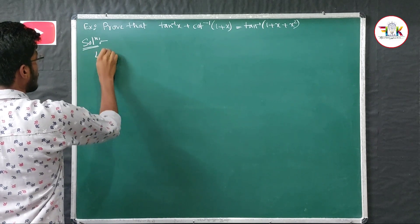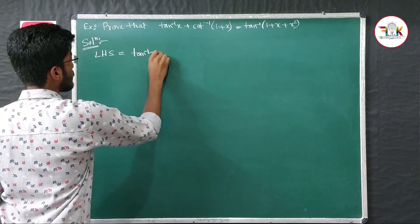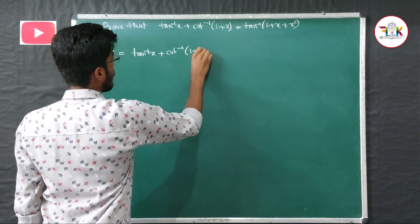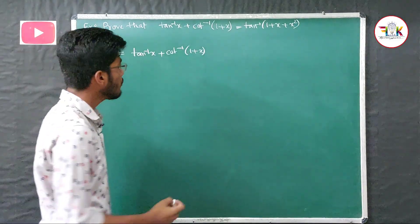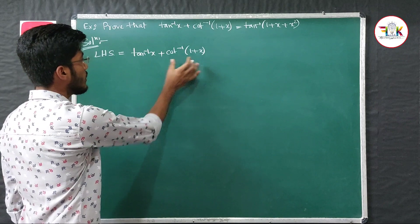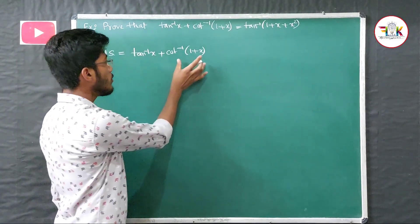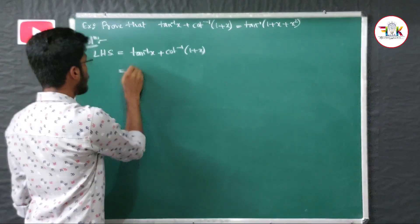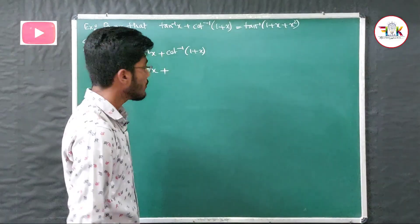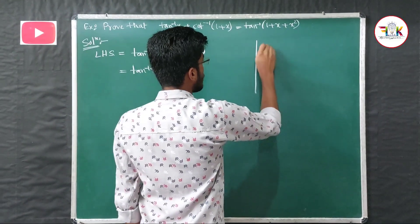Taking the left-hand side, we have tan⁻¹x + tan⁻¹(1/(1+x)). We will apply the tan⁻¹x + tan⁻¹y formula and convert. We need to use 14 verse — that is, inverse — of (1+x), and then apply the tan addition formula.